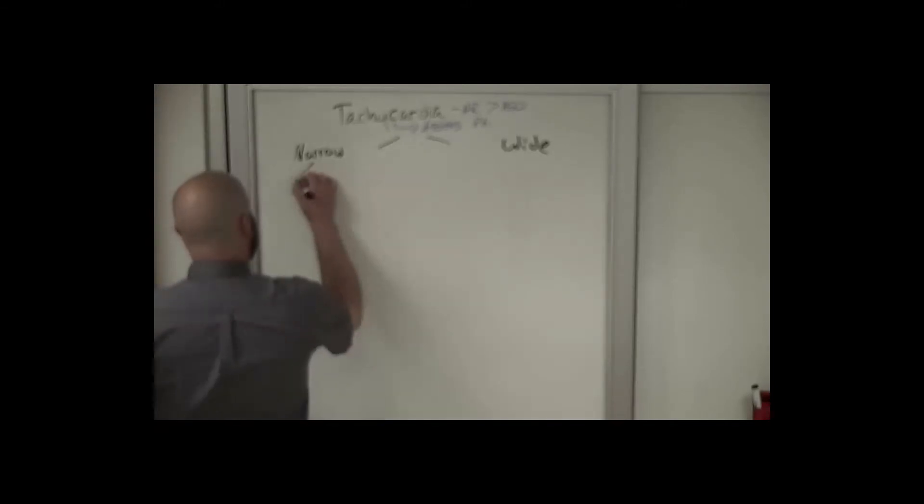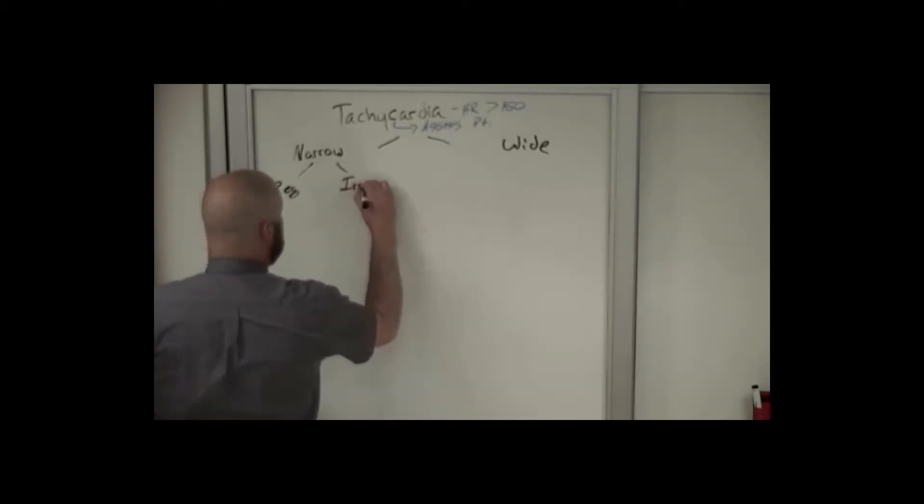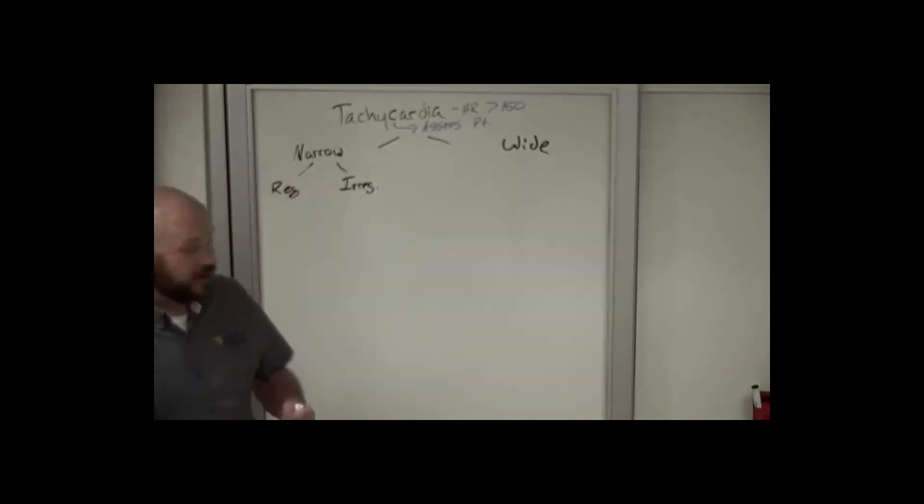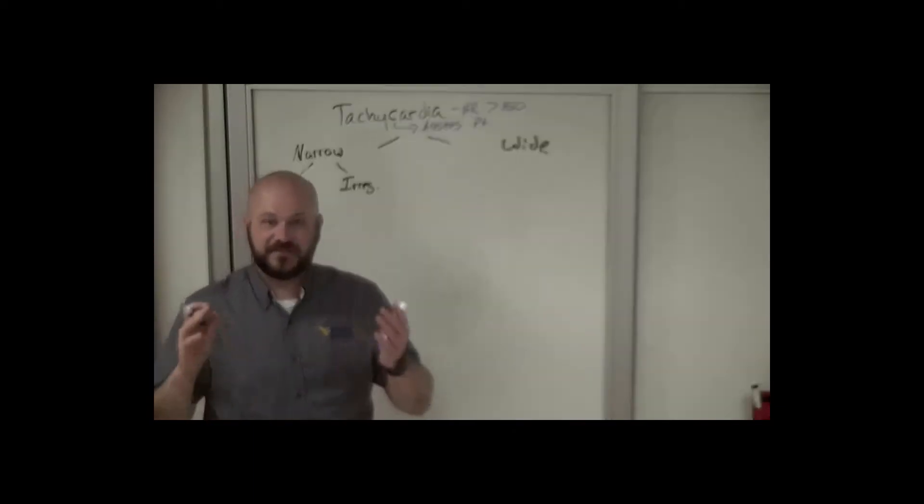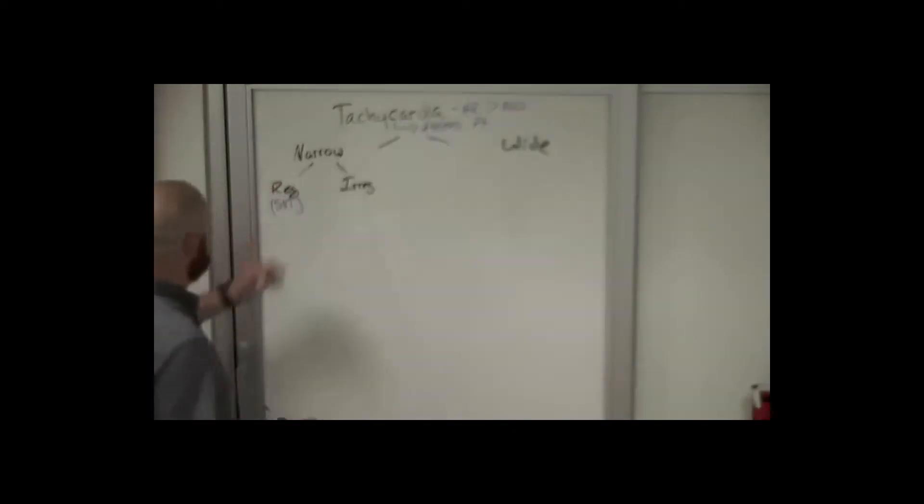Is it narrow and then is it regular or irregular? Fast, narrow, regular - most commonly this is SVT. It's not the only thing that it could be, but classically this is an SVT, a sinus tach, runaway sinus tach greater than 150. So from here we're going to break it down just a little bit further and talk about is the patient stable or unstable.